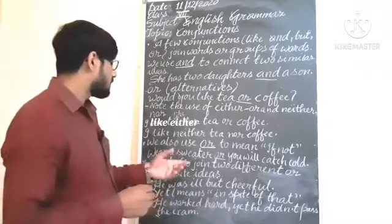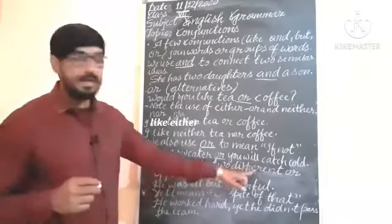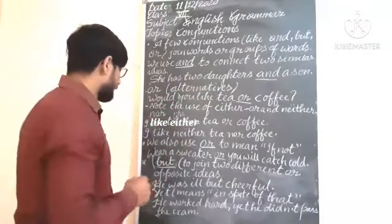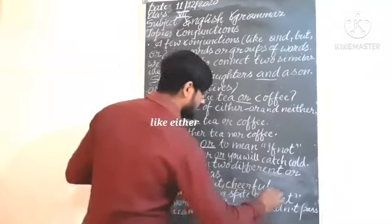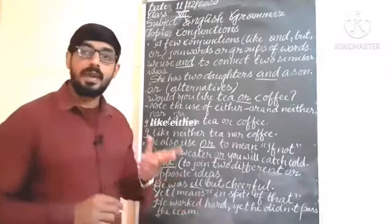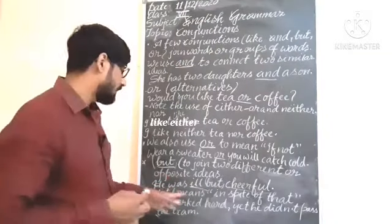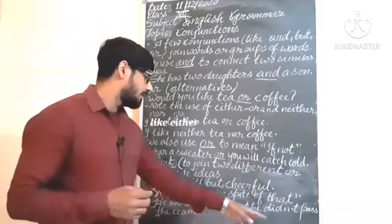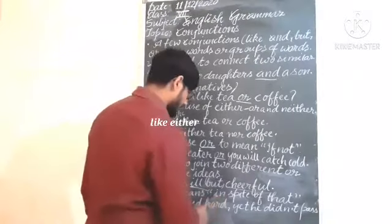Now 'but'. To join two different or opposite ideas we use 'but'. For opposite ideas we use 'but', and for similar ideas we use 'and'. Here the example is: 'He was ill but cheerful.' Two opposite ideas. We also use 'yet', which means 'in spite of'. For example: 'He worked hard yet he didn't pass.' The meaning of 'yet' is 'in spite of'.